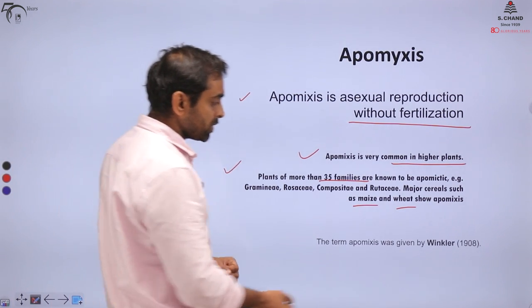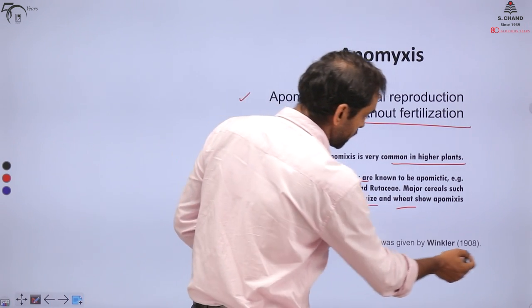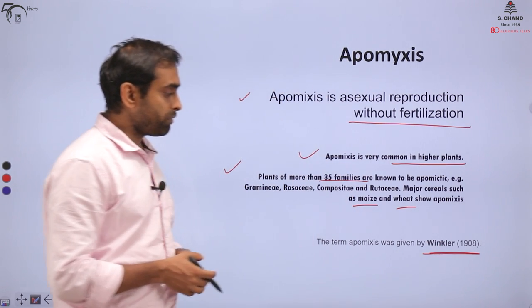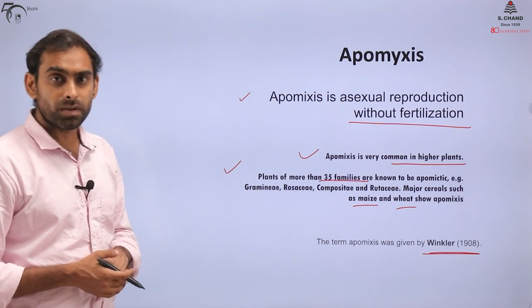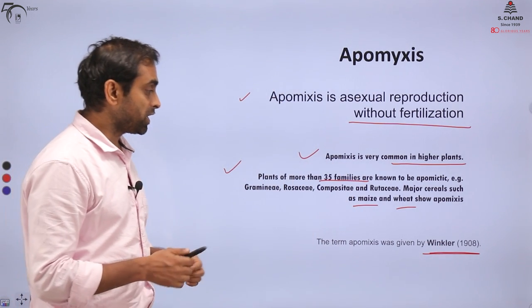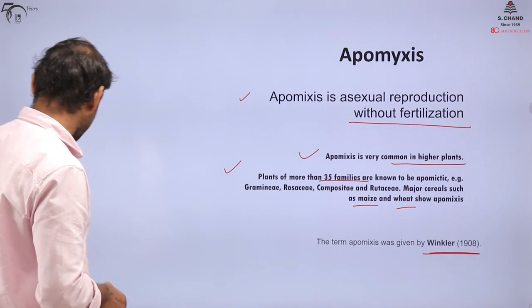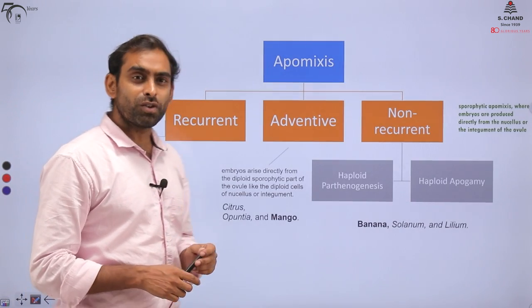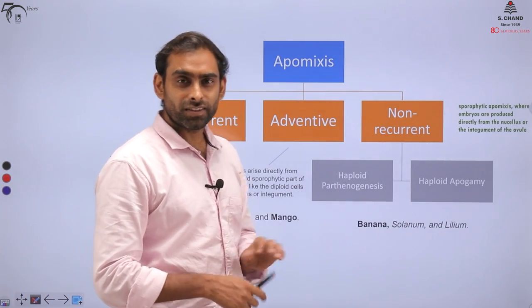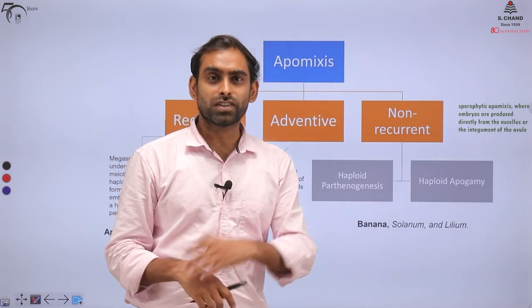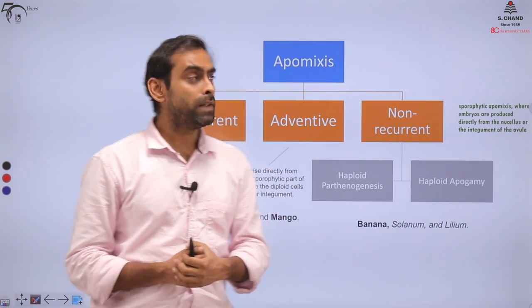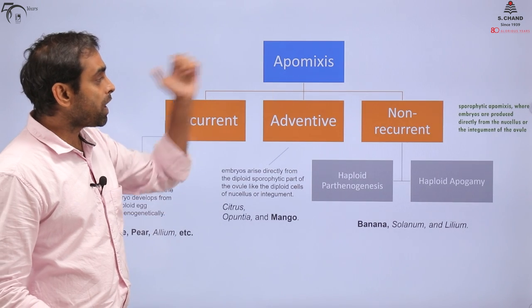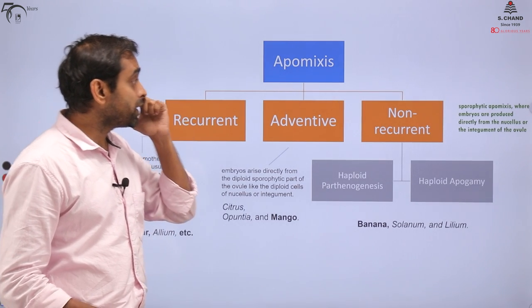The term Apomyxis was for the first time given by a scientist called Winkler in 1908 — it is almost a century-old concept, and a lot of additions have happened since then.